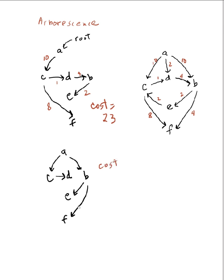And this adds up to cost - let's see, this is 8, 2, 1, 10, and 10, 10, 21, 23, 31.